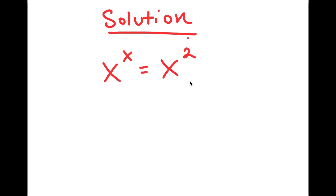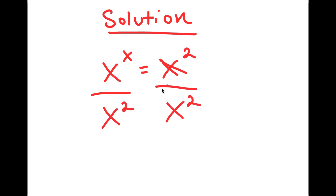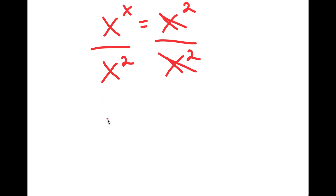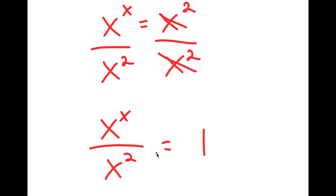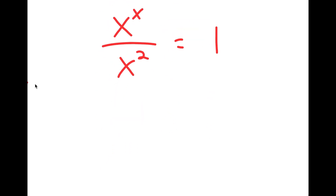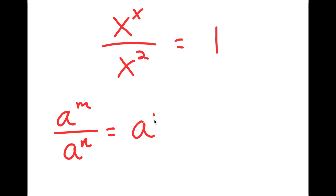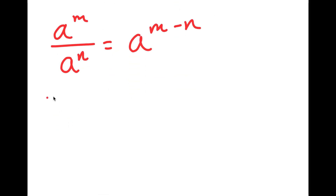The first thing I'm going to do is divide both sides by x to the power of 2. These two cancel out, and I get x to the power of x over x to the power of 2 is equal to 1. Now, if I have something in the form a to the power of m over a to the power of n, this is the same thing as a to the power of m minus n. So x to the power of x over x to the power of 2 equals x to the power of x minus 2, which is equal to 1.